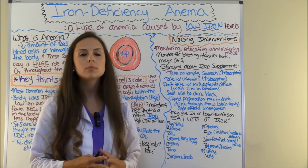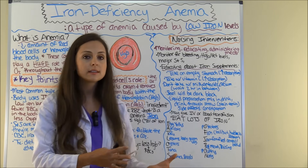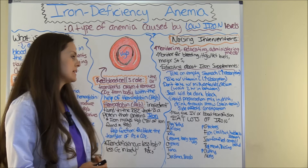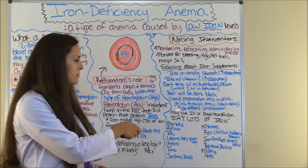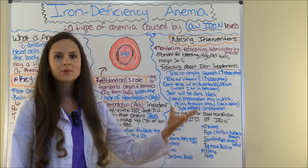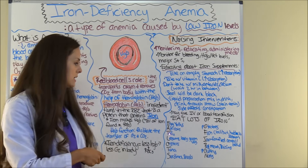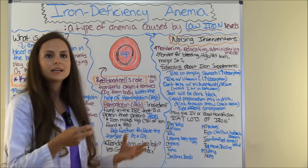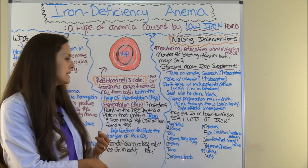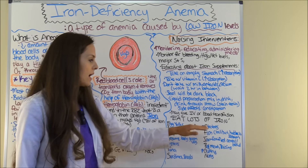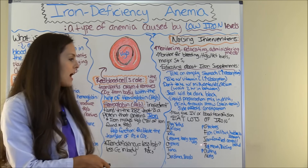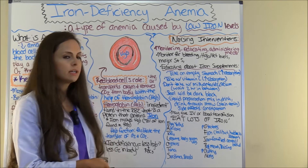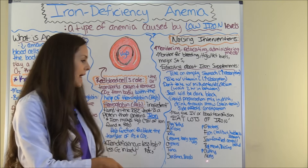Educate patients on incorporating iron into their diet. To remember which foods are high in iron, use the mnemonic EAT LOTS OF IRON: E — egg yolks, A — apricots, T — tofu, L — legumes and leafy green vegetables like spinach, O — oysters and shellfish, T — tuna, S — sardines and seeds, O — potatoes, F — fish like halibut, haddock, or salmon, I — iron-fortified cereal or breads, R — red meats like beef or raisins, O — poultry like chicken or turkey, N — nuts.